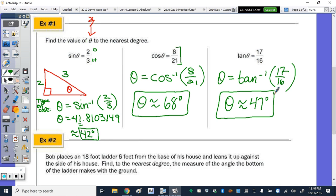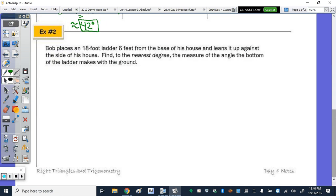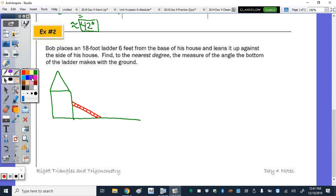So we're going to do the same thing down below. We're just going to draw the picture that represents what's going on in the question. All right, so Bob places an 18-foot ladder six feet from the base of his house. So here's Bob's house. Here's the ground. He places a ladder leaning up against his house. Now, the ladder is 18 feet long, and it's 6 feet from the base of his house. So 18 feet is the length of the ladder, and it is 6 feet from the base of the house. The house is standing upright, so there's our right angle, and then we have our right triangle. So find to the nearest degree the measure of the angle the bottom of the ladder makes with the ground.